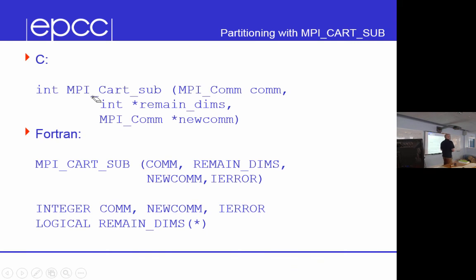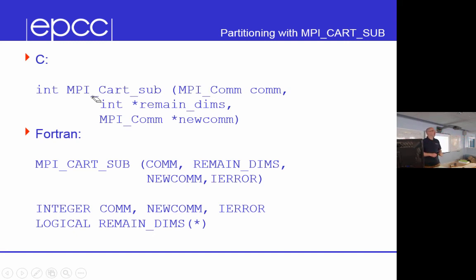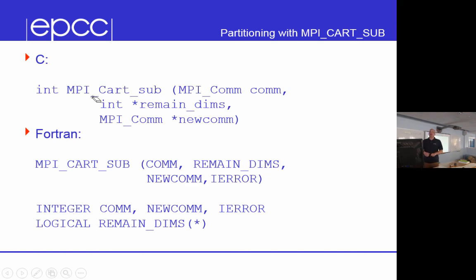There are other ways to play with communicators as well — you don't just have to use Cartesian or graph topologies. There are functions which let you take MPI_Comm_World and split it based on a rank, or split it based on a string. For example, you can get the hostname for each server you're running on and create a communicator just for that node, and then create communicators across all the nodes but only involving one process per node. There are pure communicator routines which let you split and join communicators. The Cartesian topology is an easy way to do that because it has a physical and logical mapping between ranks and the data decomposition you have.